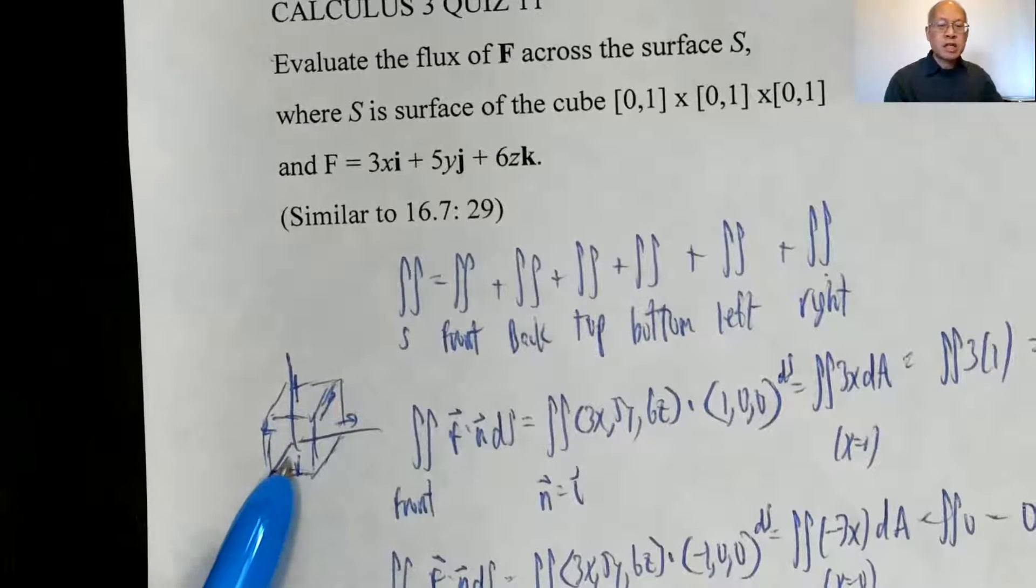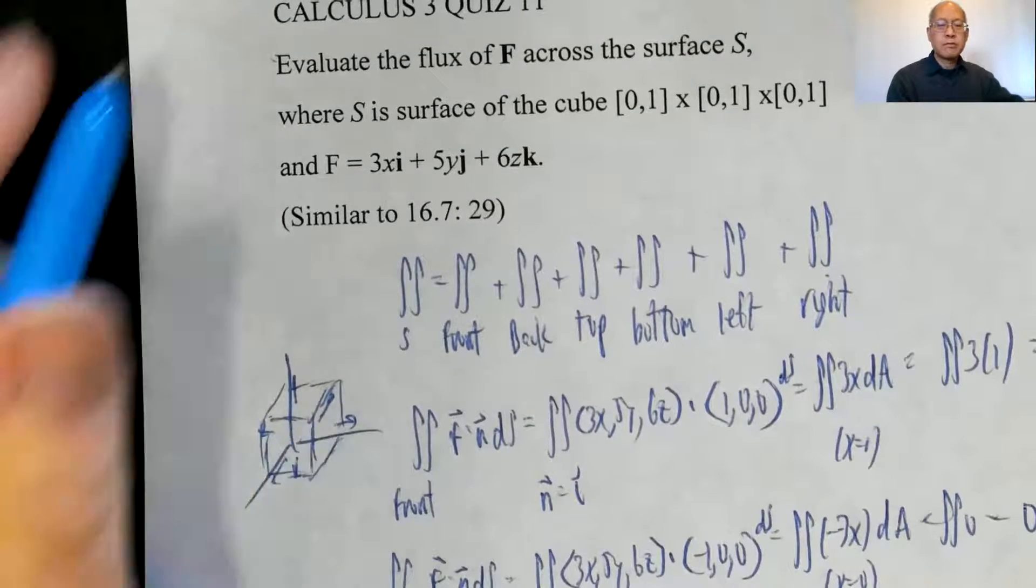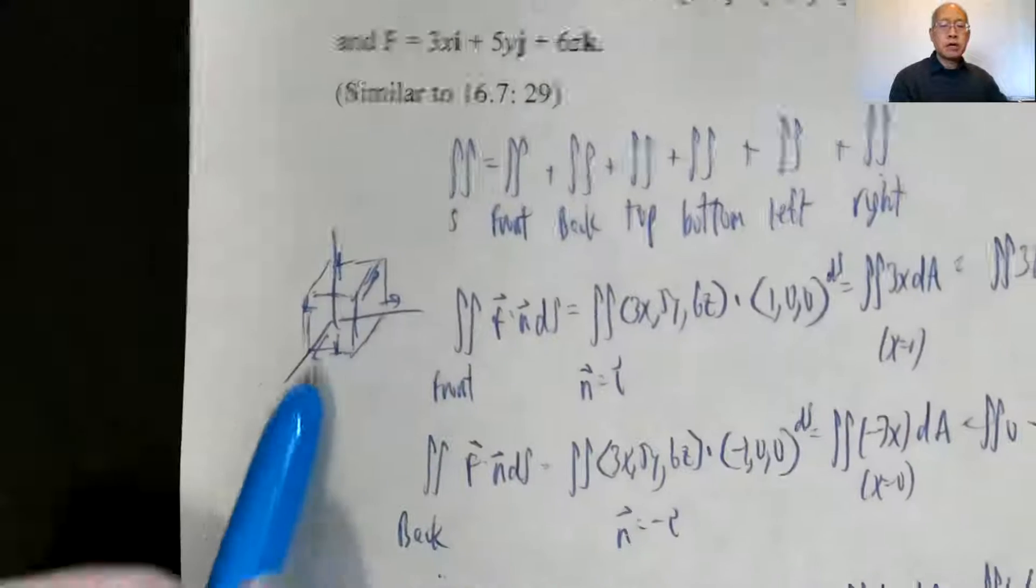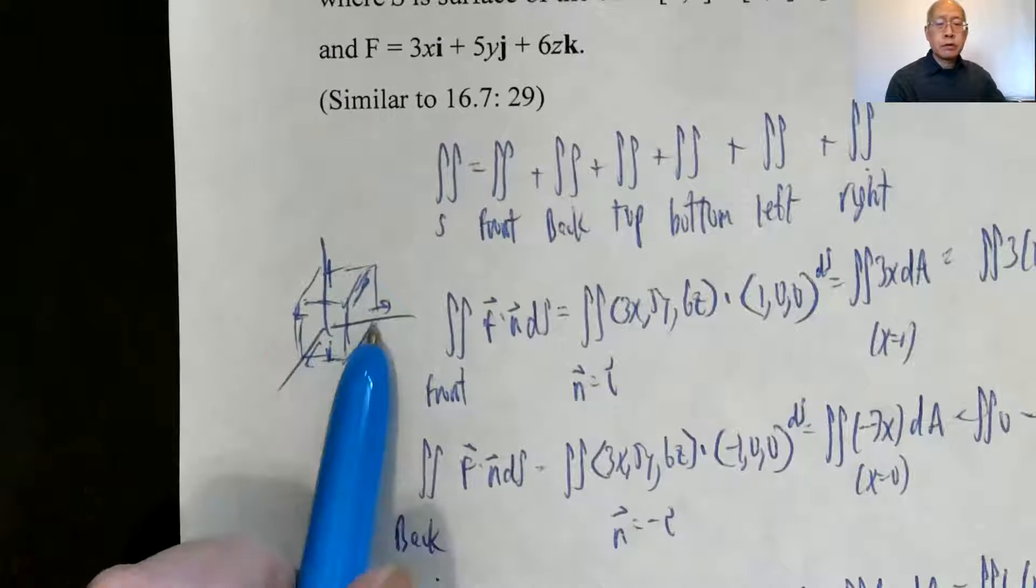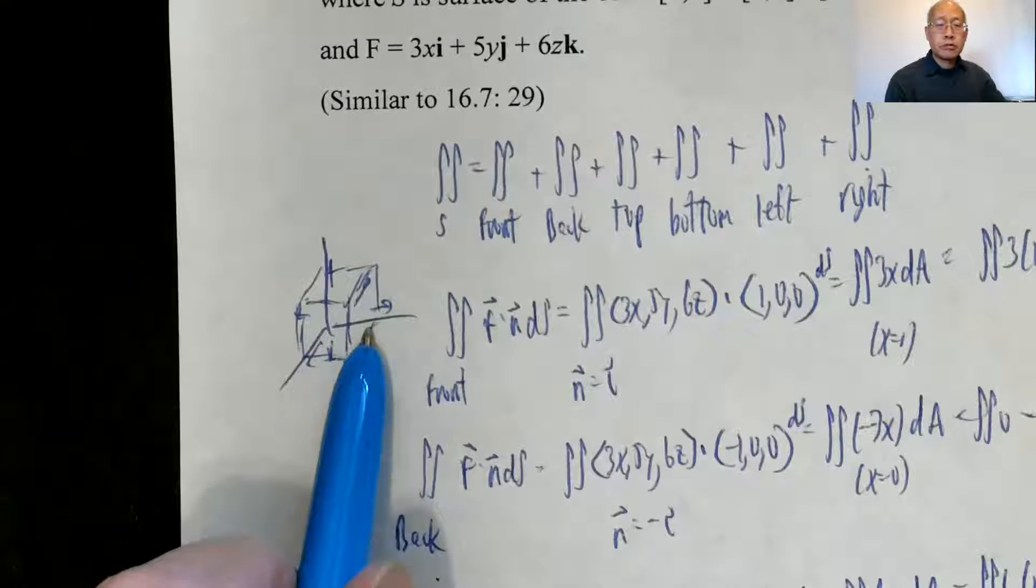So the front is x equals 1, the back is x equals 0, top is z equals 1, bottom is z equals 0, left is y equals 0, and the right is y equals 1.